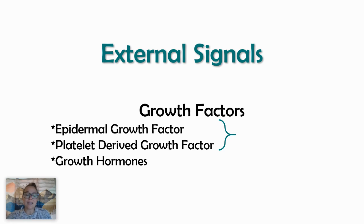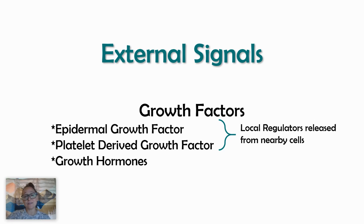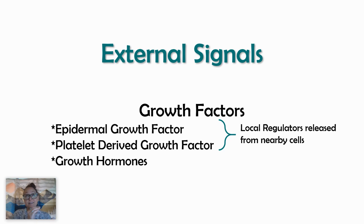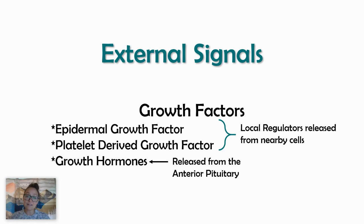Common examples of external signals would be epidermal growth factor as well as platelet-derived growth factor. Both of these are local regulators released from nearby cells. They travel a short distance to a nearby cell to turn on gene expression for moving through the cell cycle to make new daughter cells. We also have growth hormones released from our anterior pituitary that travel through the bloodstream, targeting cells for growth.